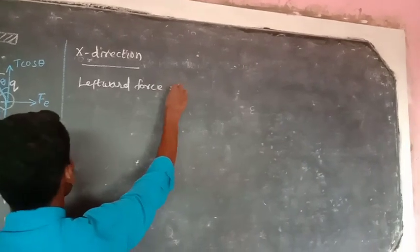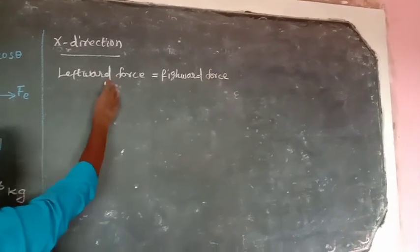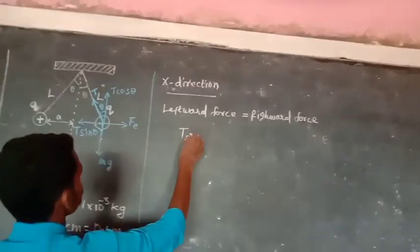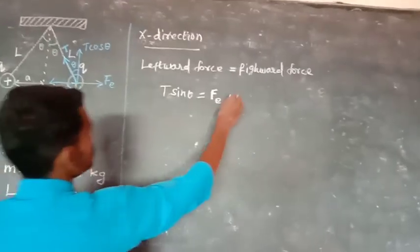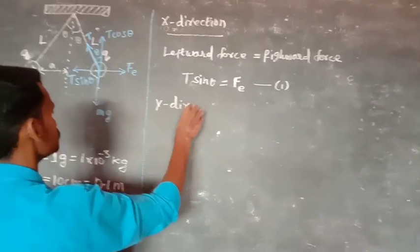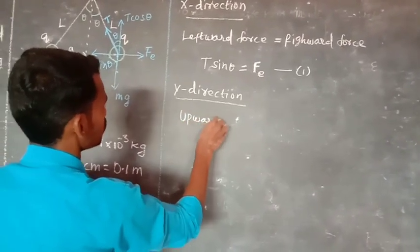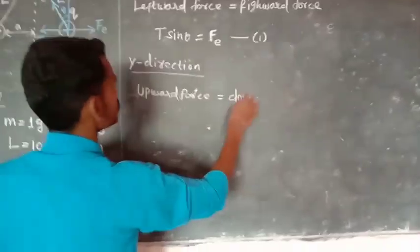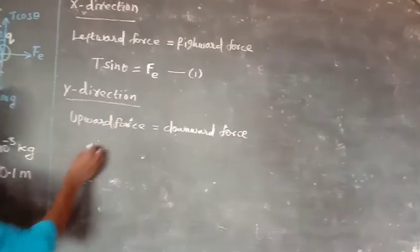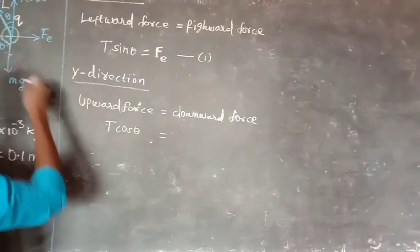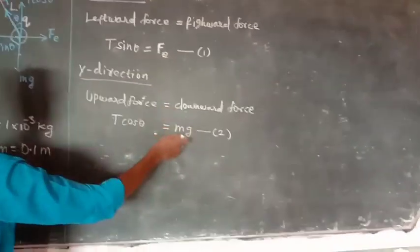After resolving forces, the horizontal component equals the electric (Coulomb) force, and the vertical component equals the downward gravitational force. So T·sinθ = F and T·cosθ = mg. Dividing the first equation by the second gives tan(θ) = F / mg.